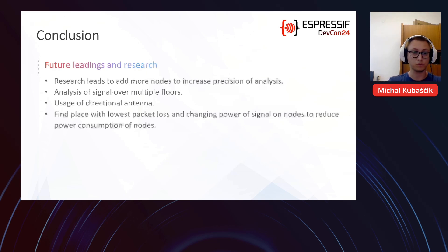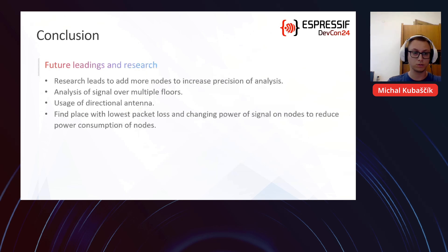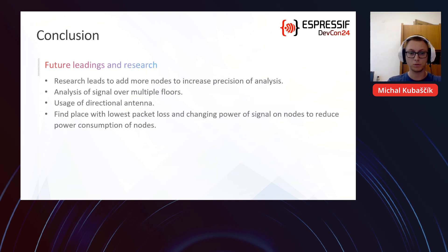For future work and next research: we plan to add more nodes to increase the precision of analysis. We will also analyze signal propagation across multiple floors to compare with through-wall performance. We can use directional antennas for higher signal strength. Finally, we plan to find the best placement for the central unit to minimize packet loss, then reduce signal power of nodes to lower their power consumption — since power consumption highly depends on signal power.